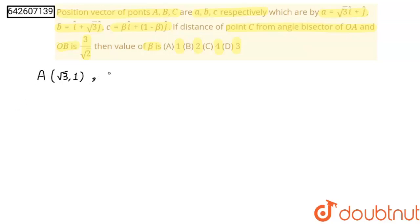Okay, now for B, coordinates will be (1, √3). And coordinates of C is (β, 1 - β).